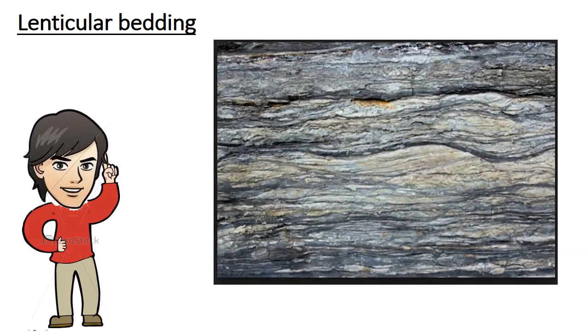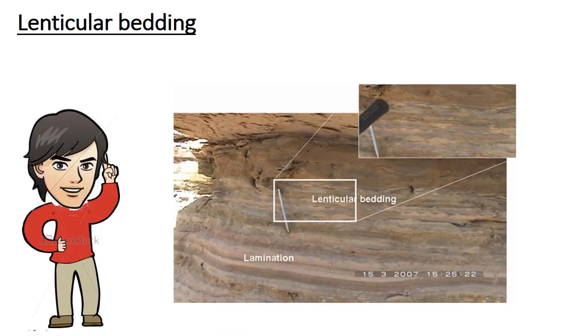Unlike flasor bedding, lenticular bedding is composed of more mud than sand particles. It is a cross-laminae of isolated sand ripples, which are completely surrounded by mud. Lenticular bedding is formed during periods of slack water. This is a short period of time before the tide changes direction, which is when the body of water has zero velocity. The suspended mud particles are then able to settle on small formations of sand during this period.